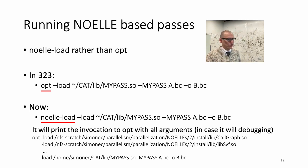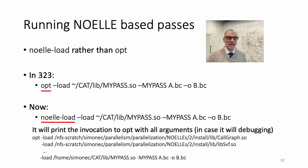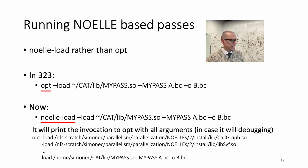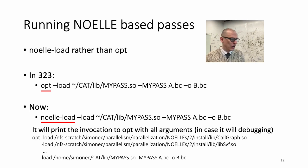You'll see there is a bunch of shared libraries that are basically passes or C++ classes. At the end, you have whatever you passed as parameter to noell-load — in this case, loading mypass, invoking it, applying it to this IR, and generating the new IR.